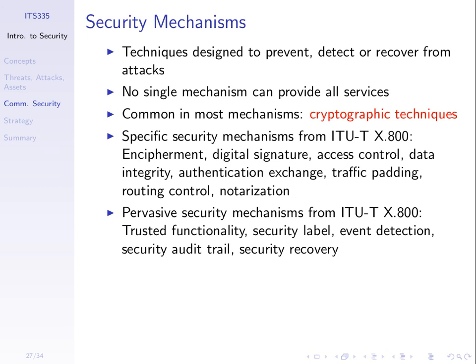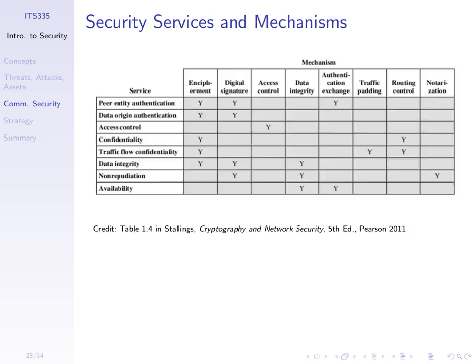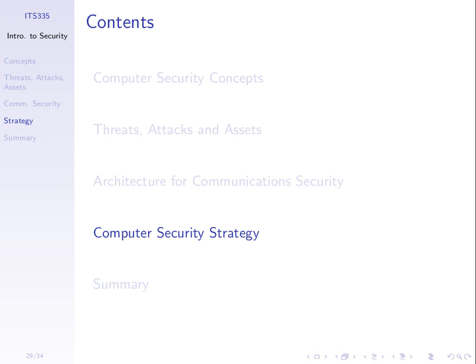We've listed six security services: authentication, data integrity, data confidentiality, access control, availability, and non-repudiation — remember those six. We've also gone through six types of attacks. Most security mechanisms use cryptography. Our next topic will cover cryptography: encryption, digital signatures, authentication exchanges, and related mechanisms. Tomorrow we'll talk about the difference between passive and active attacks and finish on computer security strategy before moving to cryptography.